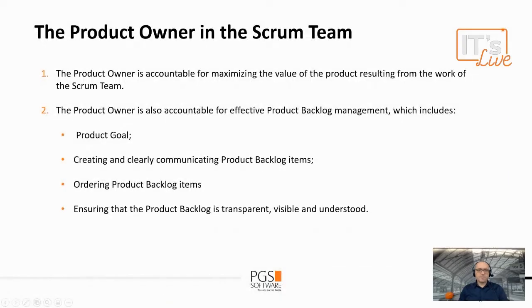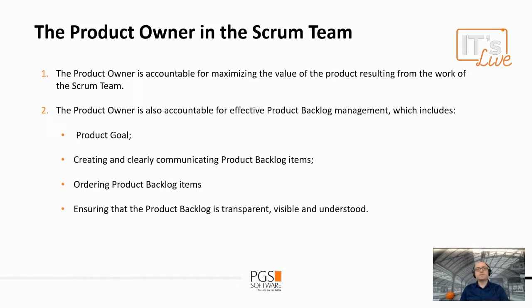According to the Scrum Guide, the product owner is responsible for maximizing the value of the product resulting from the work of the Scrum team. It means they are accountable for effective product backlog management, which includes the product goal, creating and clearly communicating product backlog items, ordering product backlog items, and ensuring that the product backlog is transparent, visible, and understood.